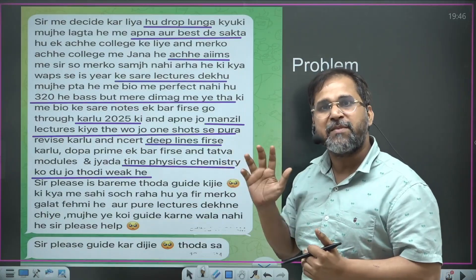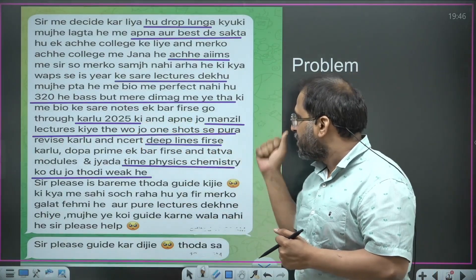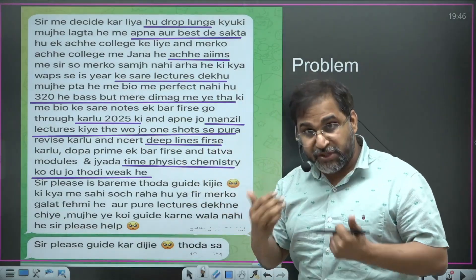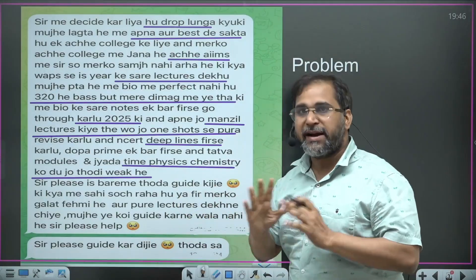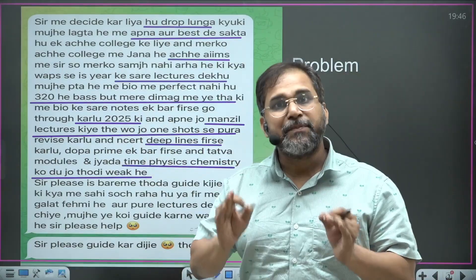It will be good if I watch all the lectures, there are 320. As soon as he wrote 320, bio came to his mind. And for 2025 I should watch your Manzil lectures, I should see the deep line. And physics chemistry is a little weak, he is feeling like this. What should I do for that? Please guide me a little.